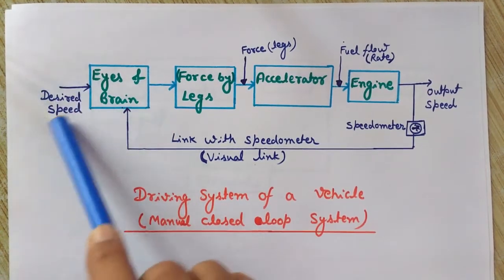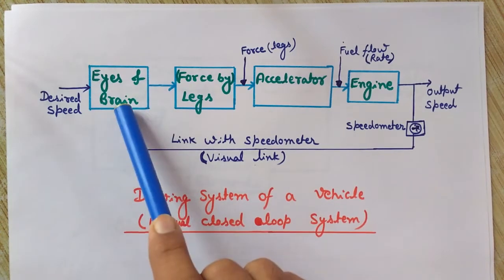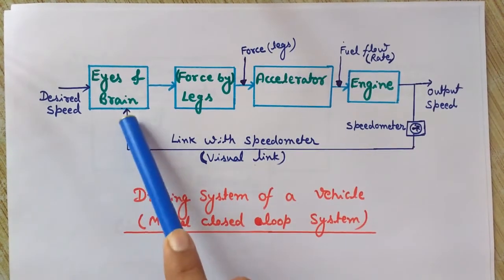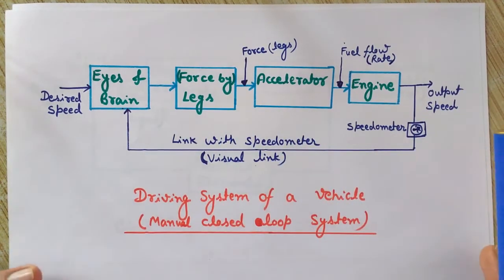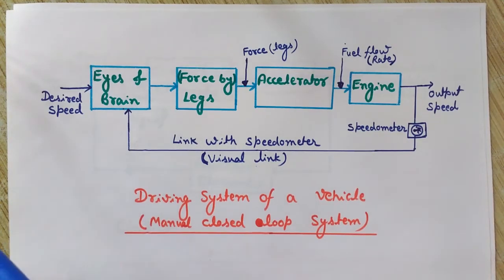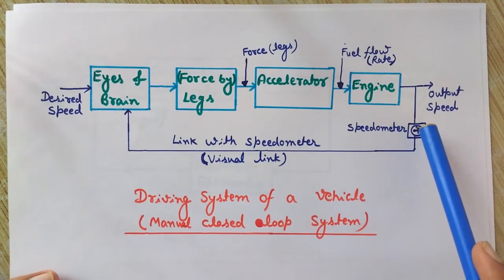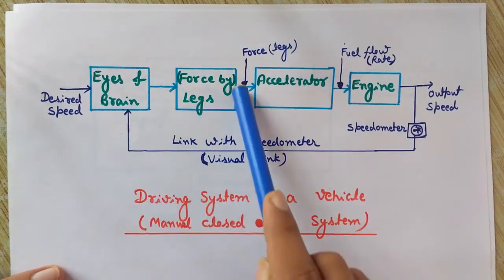Here we have a desired speed that we want to achieve. The driver uses his eyes and brain to achieve a certain speed by watching the output speed on the speedometer. First, the driver sets a constant speed in his mind, then he looks at the speedometer to see the current speed of the vehicle at that moment.